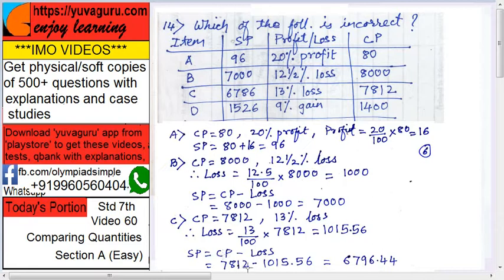This is 7812 minus 1015.56 equals 6796. Remember this. What is the answer over here? 6786. So C is not correct.